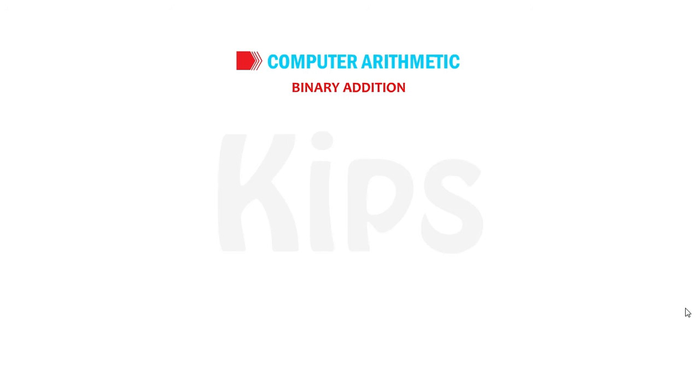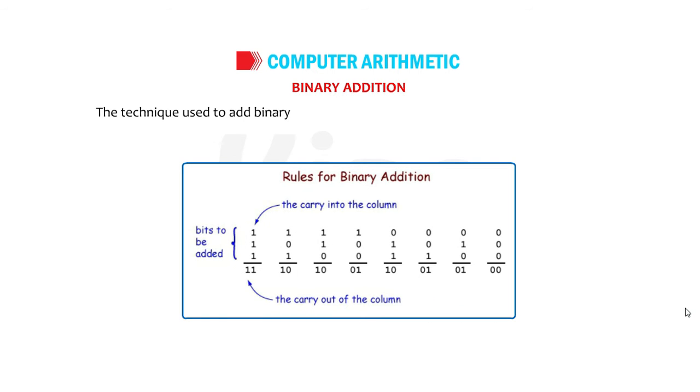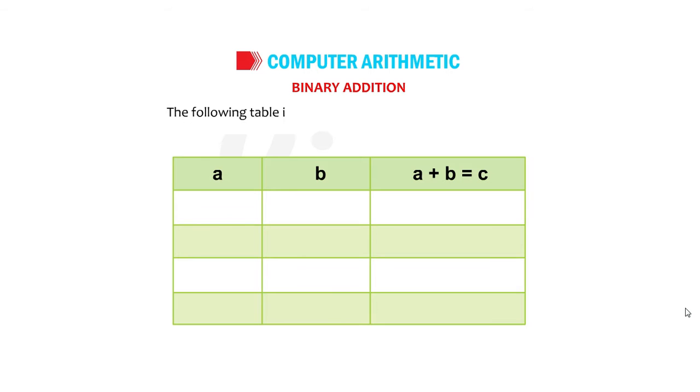Binary Addition. The technique used to add binary numbers inside the computer is very easy and simple. This is performed in the same way as you perform addition with decimal numbers. The following table illustrates the addition of two binary digits.